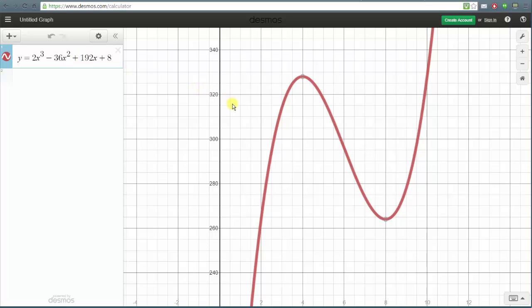So if we scroll down to this low point, notice how the coordinates are 8 comma 264. Which means we have a local minimum at x equals 8, and the local minimum value is the y value or function value of 264.